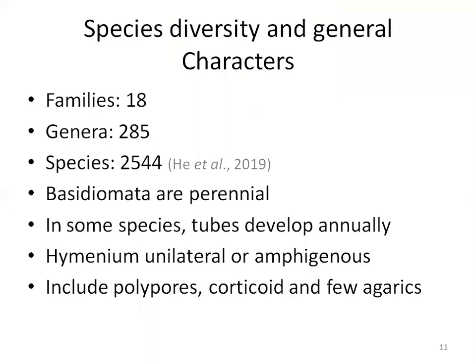According to He et al., based on their DNA study, they stated that Polyporales is monophyletic — that is, most of the taxa clustered in this order are similar and evolved from a common ancestor, making their classification more reliable. According to them this order consists of 18 families, 285 genera, and 2544 species up to 2019.